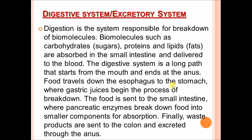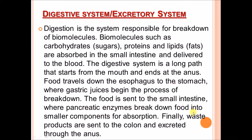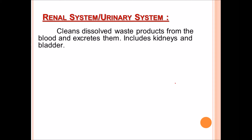Food travels down the esophagus to the stomach, where gastric juice begins the process of breakdown. The food is then sent to the small intestine, where pancreatic enzymes break food into smaller components for absorption. Finally, waste products are sent to the colon and excreted through the anus.